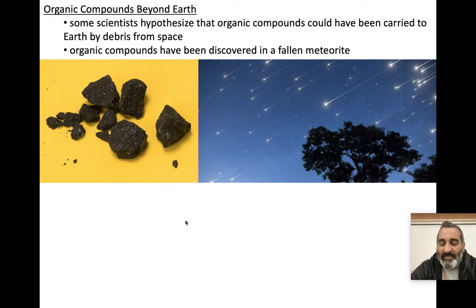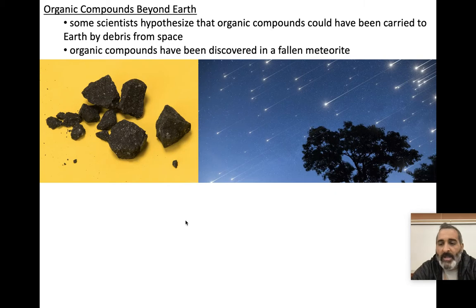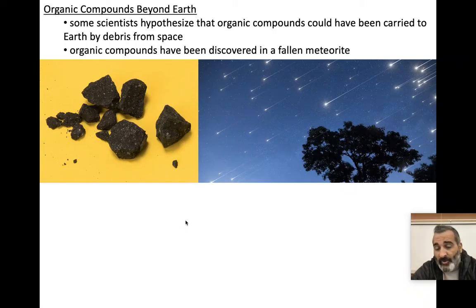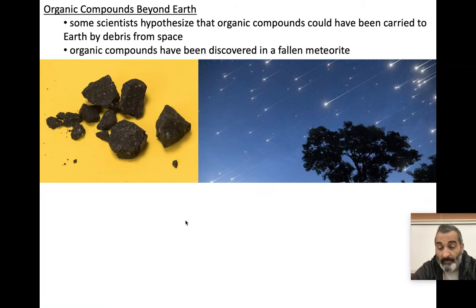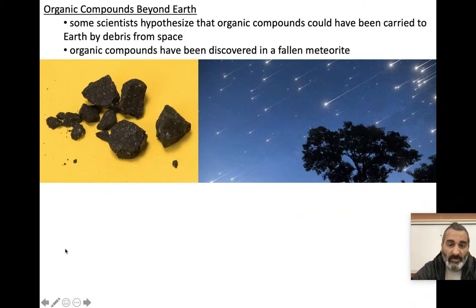Some people believe in what's called the seeds from space hypothesis. Your book didn't mention it, but some people believe that the first cells to appear on Earth showed up here on a meteorite — that rocks crashed into the Earth and brought living things with them in those rocks.